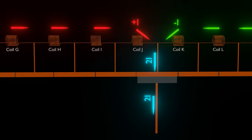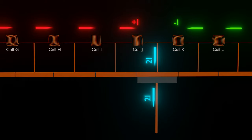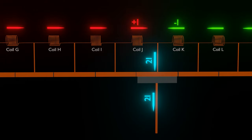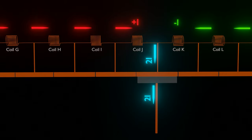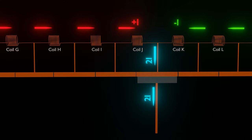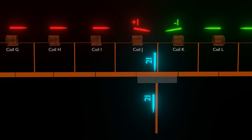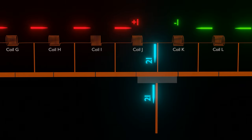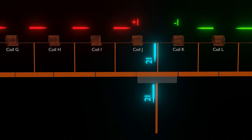When a coil crosses a brush, the current in the coil is reversed. During commutation, current in the coil changes from plus I to minus I. Here we can see that coils H, I, and J carry current plus I in the right direction, and coils K and L carry current minus I in the left direction. Total current through the brush is 2I.